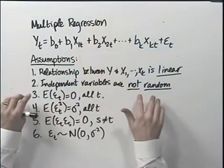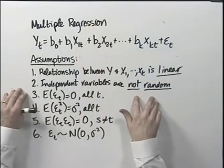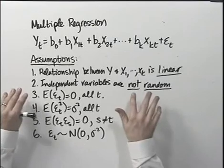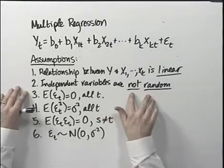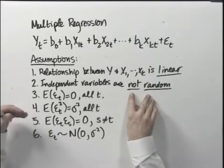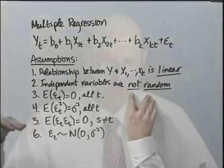The second assumption is that the independent variables are not random. This seems restrictive, and indeed it is somewhat overly restrictive. We make this assumption to make statistical inference easier. If the independent variables are random, we still get the same general flavor of results in terms of hypothesis testing and inference, but it's more difficult to prove these results statistically. Another way to think about this is that the X variables are all fixed in repeated sampling. It's almost like you're taking samples of the dependent variable over time, fixing the X's and looking at the same group of X's but seeing how Y changes over time.